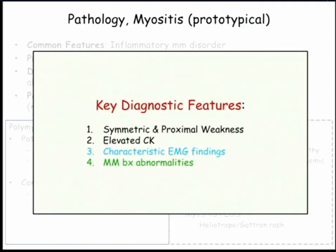As a resident on the rheumatology rotation, these are the four diagnostic features for myositis: symmetric and proximal weakness, high CK, characteristic EMG, and a muscle biopsy. So clinically there are really only two things: symmetric proximal weakness and a high CK.